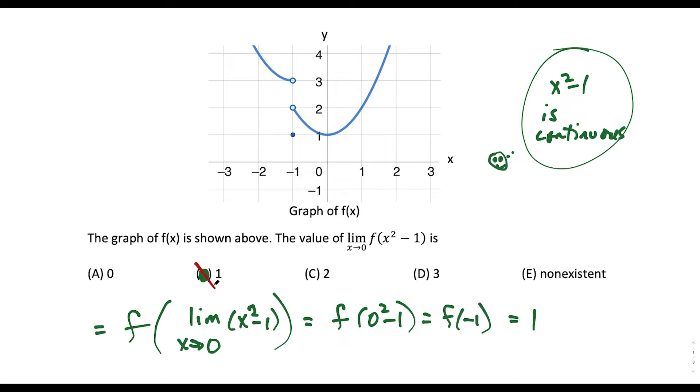But no, we cannot do this here. This is a very dangerous bear trap. The problem is that when we find the limit as x approaches 0 of x squared minus 1 and get negative 1, f of x is not continuous at negative 1. So we cannot find this limit simply by plugging 0 into the middle and then evaluating the resulting expression.